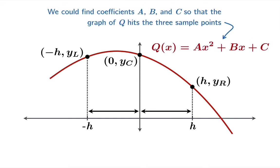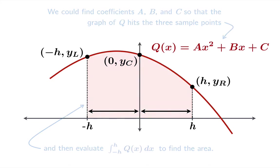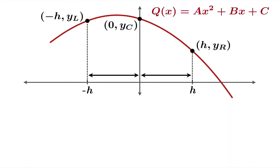Now you might think we could find the coefficients a, b, and c in terms of the given quantities — crank out that quadratic explicitly — and then integrate the polynomial to find the area. We could do that, but we're going to be a little sneakier. We're going to start finding the area first, and then figure out how to express it in terms of the coefficients. We'll never really get around to finding a, b, and c explicitly.